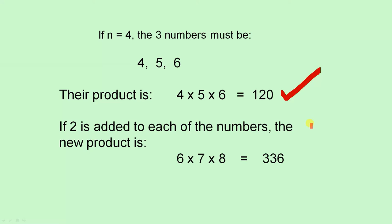If 2 is added to each of the numbers the new product is, 4 plus 2 is 6, 5 plus 2 is 7, and 6 plus 2 is 8. If we multiply 6 by 7 by 8 that gives us 336. And that is the answer to the second part of the question.